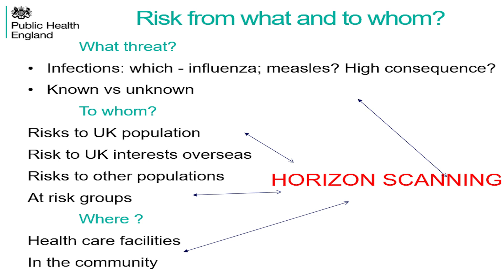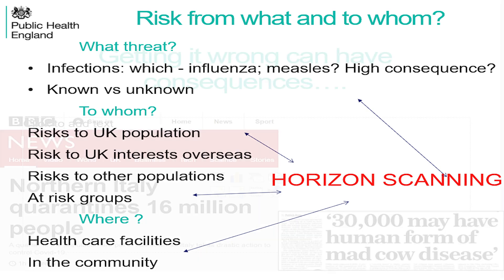We started off by looking at risks to the UK population, and then after various demands from various organisations, we expanded it to UK interests anywhere, which turned out to be almost all the world. And where are we talking about risk? Are we talking in the community, in which countries, at borders? We'll be looking at that in more detail.